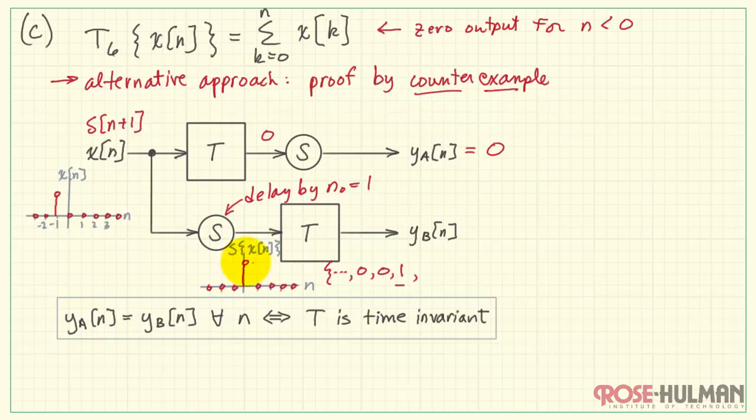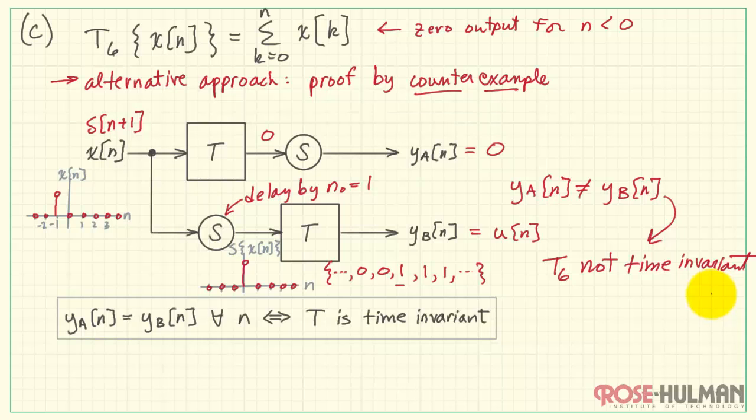And then as I continue to sum values that include this impulse, basically we just see a continuing string of 1s. We can summarize that as recognizing it's the same thing as the step function. Therefore, we see that T_6 is not time invariant.